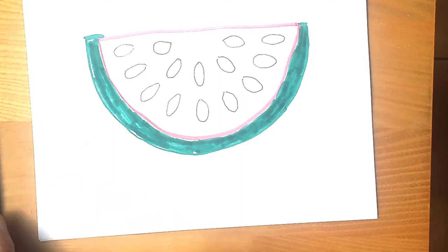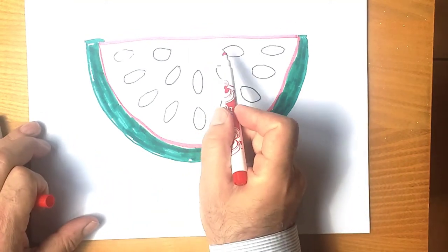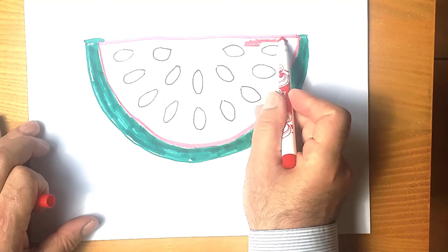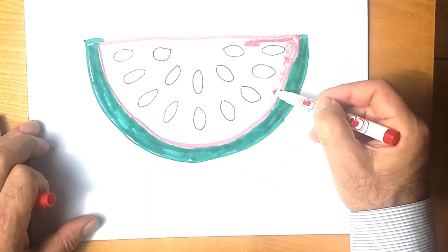And draw the middle of the watermelon in red and pink. Now let's draw watermelon seeds.